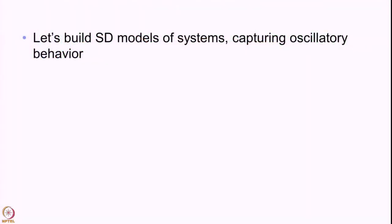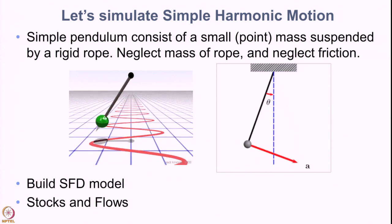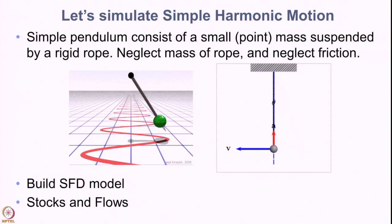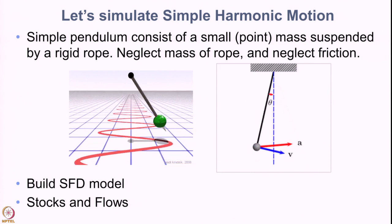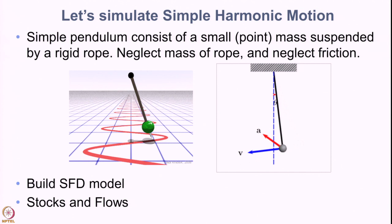Now, let us build a system dynamics model that captures this oscillatory behavior. As an example, we are going to take a look at a simple pendulum model. A simple pendulum consists of a small point mass suspended by a rigid rope, and when modeling such a system we usually neglect the mass of the rope and neglect friction.